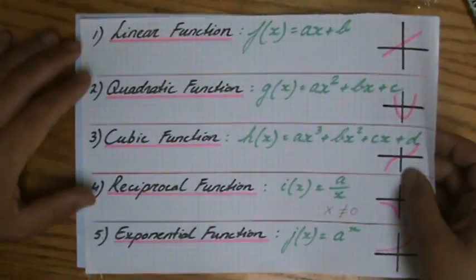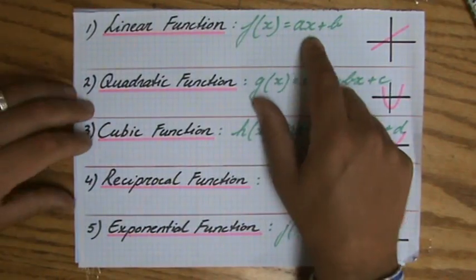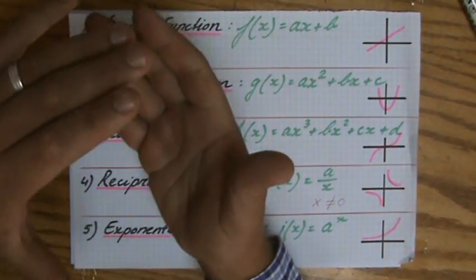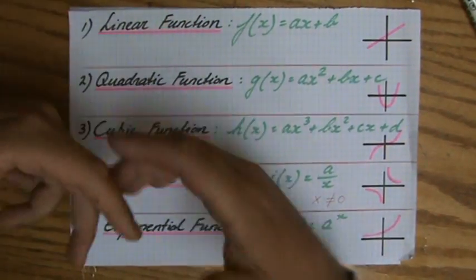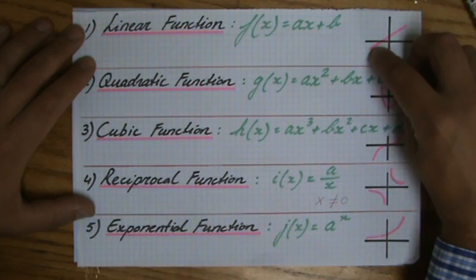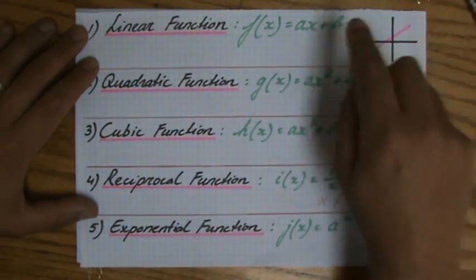To give you a bird's eye view again, we've done linear functions where the highest power of x is 1. A linear function, if we make a table of values, we need two points, but we always do at least three to check ourselves. It will always look like a straight line for a linear function.